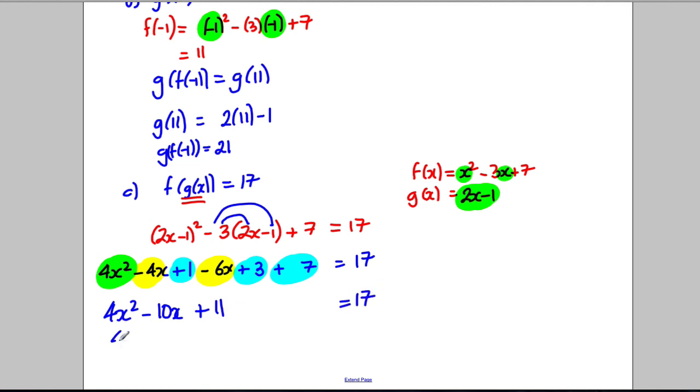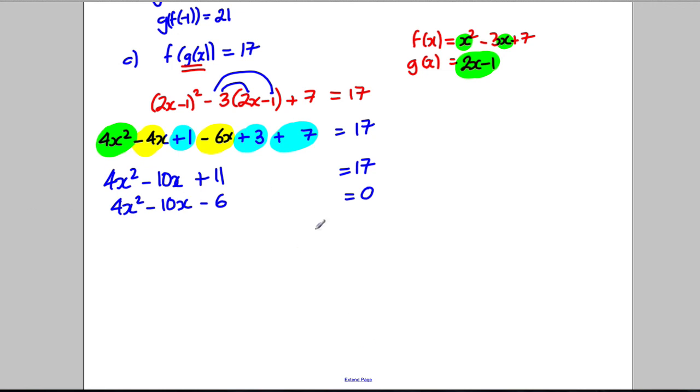Subtract the 17 from both sides: 4x² - 10x and we're going to have subtract 6 is equal to 0. It would be helpful to divide everything by 2 here because 2 is a factor of everything. So we have 2x² - 5x - 3 is equal to 0.